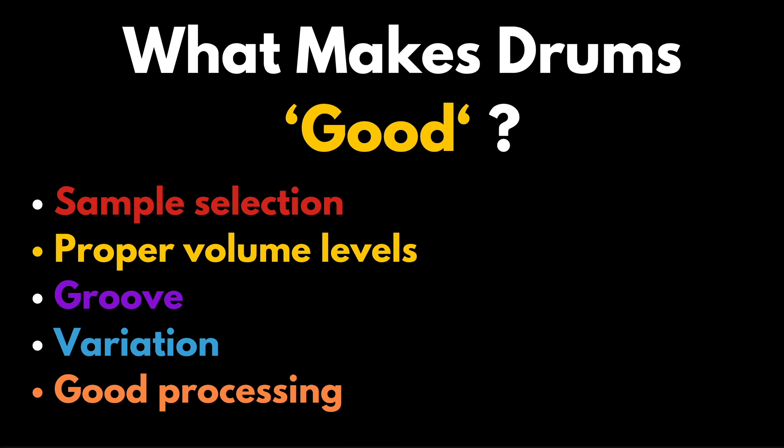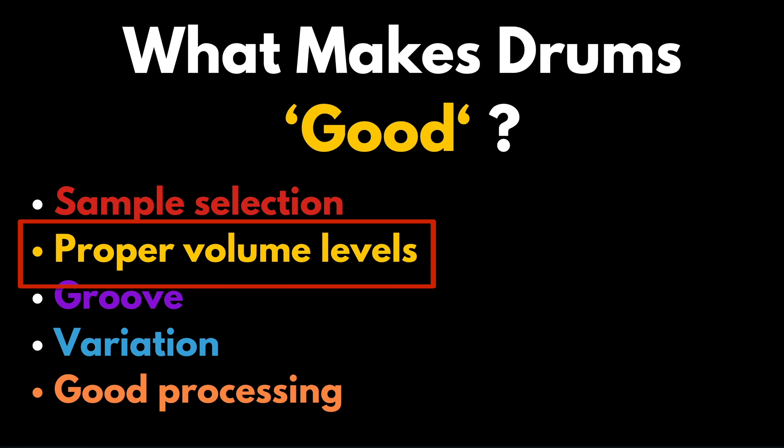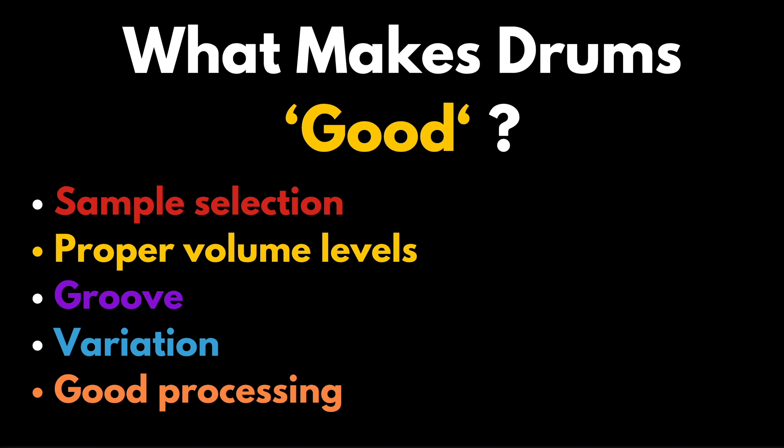The next principle seems very simple but it's very important: proper volume levels. One of the biggest things I see newer students struggle with is having everything at zero or everything at the same volume level. We don't want them at the same level — we want them proportionate to each other and where they should sit on the spectrum gain-wise and volume-wise. Volume levels will do wonders for your drum loop.